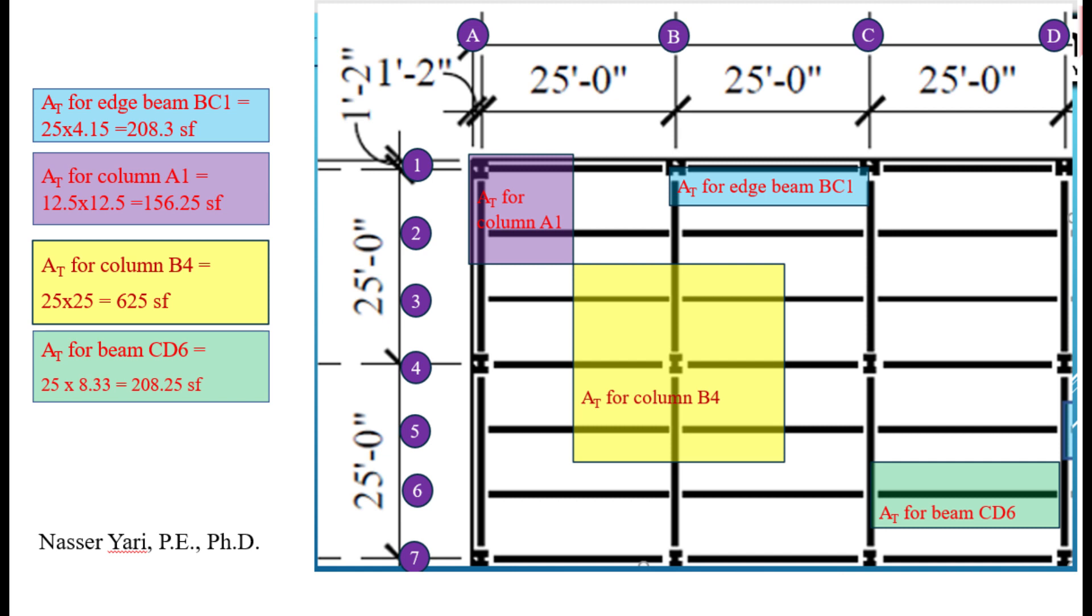So the tributary area for column A1 is going to be halfway the distance between that column and the next column. Because the column is on the corner, there's nothing on top or to the left of it, so therefore the tributary area is to the right and to the south of it. That's where it's going to be halfway between this column and the next column, and the area is going to come out to be basically 12 and a half by 12 and a half.